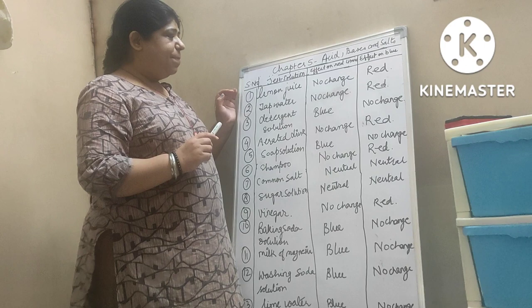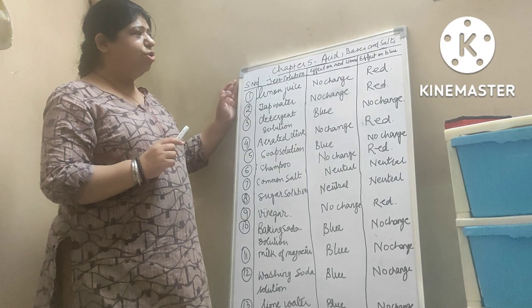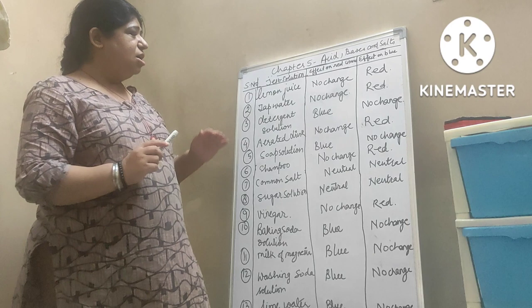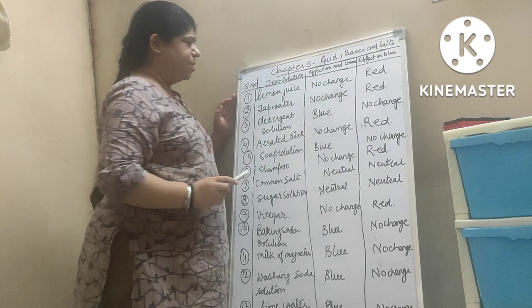Suppose these solutions are given to you. These are all solutions given to you and we are discussing red litmus paper and blue litmus paper. Then what will be the change of the corresponding solution with the red litmus paper and with the blue litmus paper?